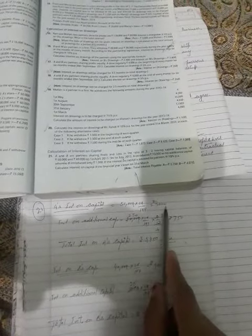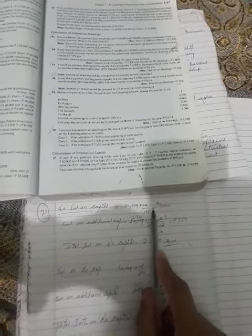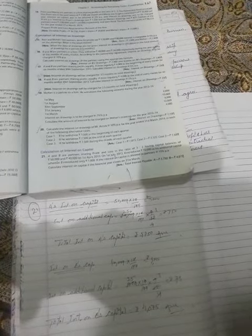First, A introduced 50,000. So 50,000 multiplied by 10 upon 100, that is the rate, equals 5,000. For time, it's the full year. For a full year case, we don't write the months separately. From 1st April to 31st March, the complete year is covered.